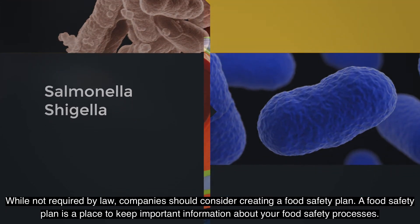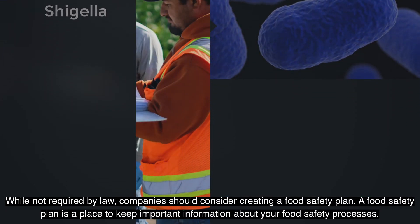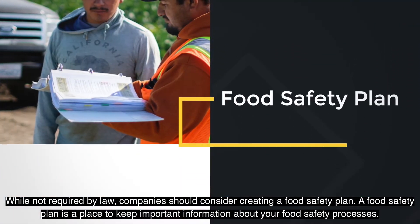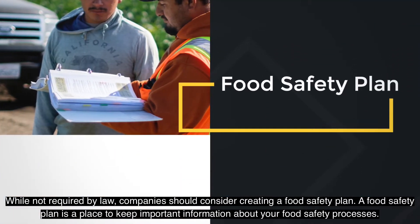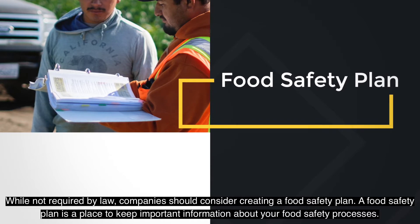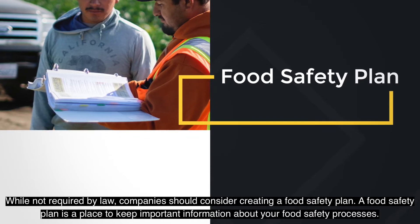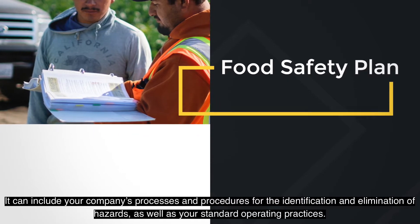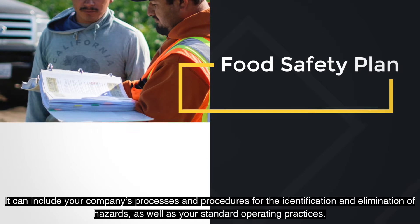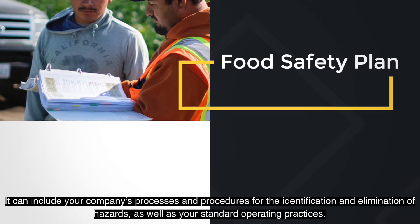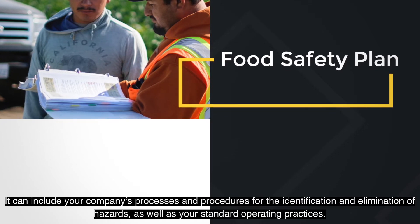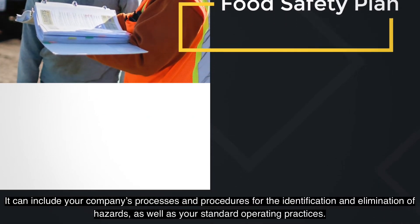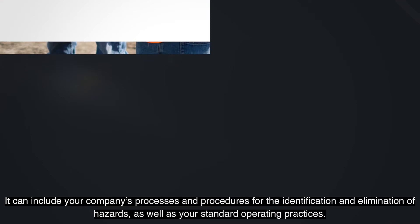While not required by law, companies should consider creating a food safety plan. A food safety plan is a place to keep important information about your food safety processes. It can include your company's processes and procedures for the identification and elimination of hazards, as well as your standard operating practices.